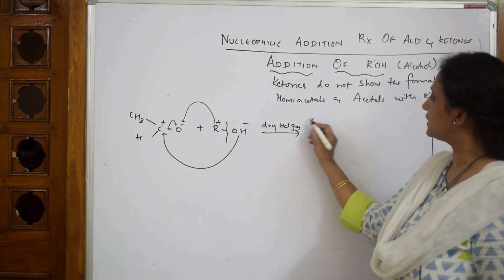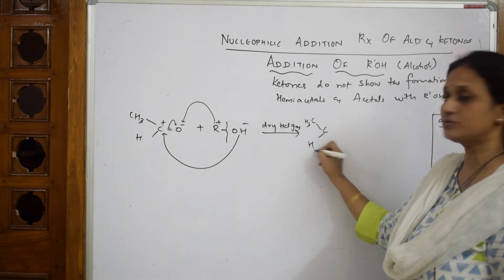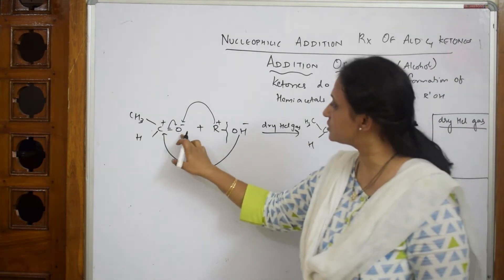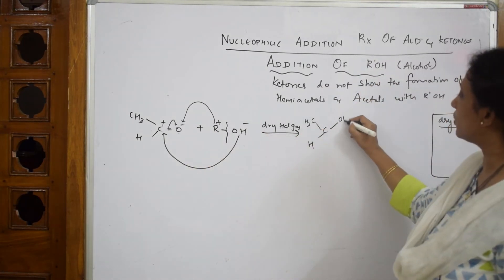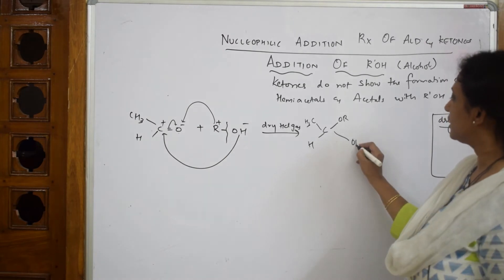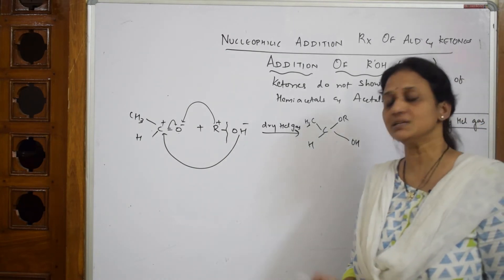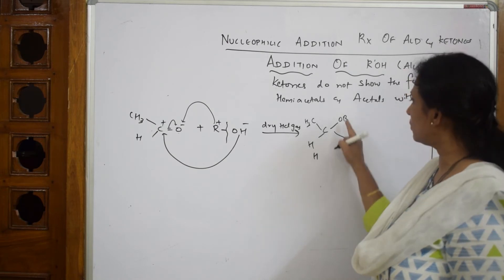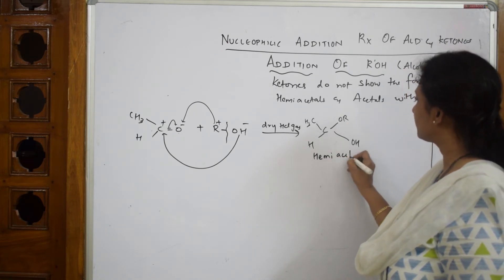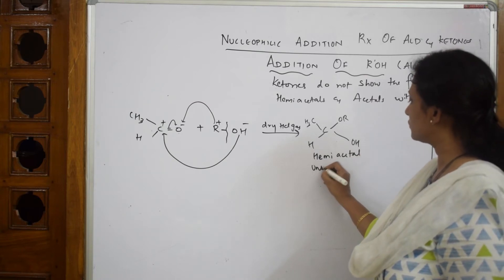When I take this product, how does this look? Carbon, your CH3 here, your hydrogen here. Now to the oxygen, what has got attached? Alkyl group, isn't it? This becomes OR. Now the OH. This compound is called hemiacetal. Remember, most students write this is acetal. No, OR is one group. This is hemiacetal. Now this is unstable.